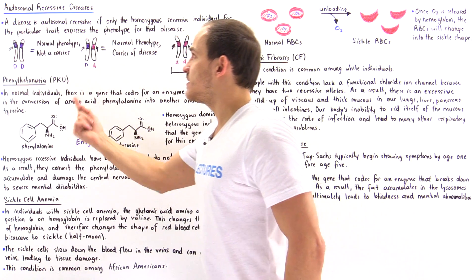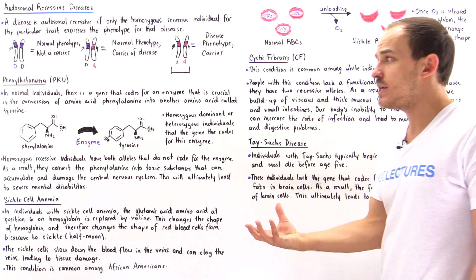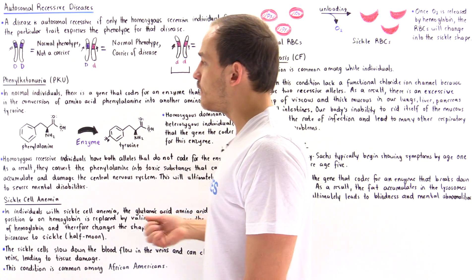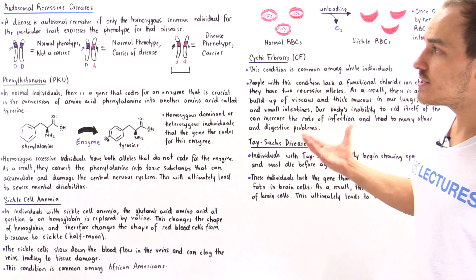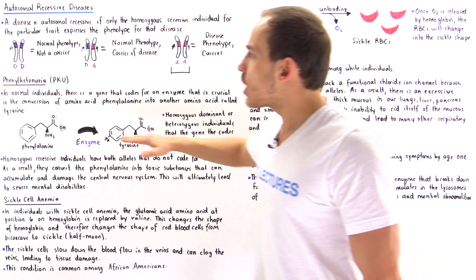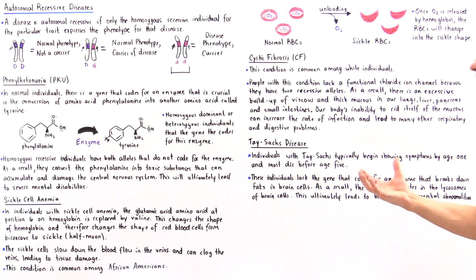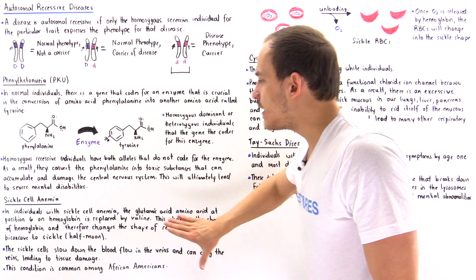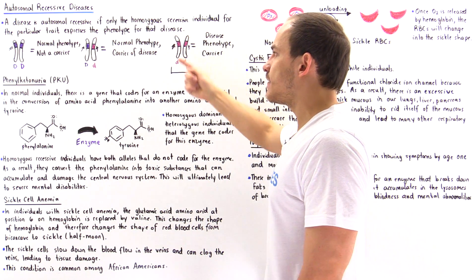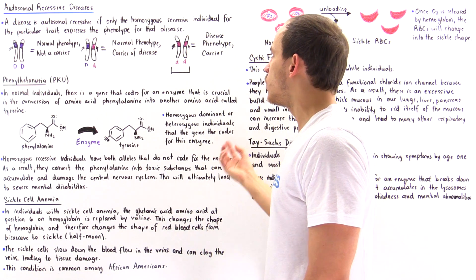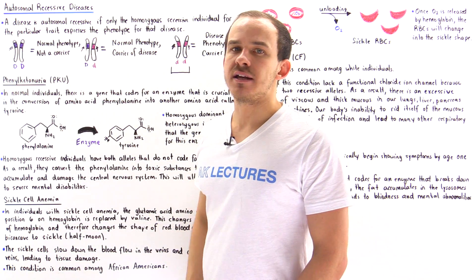Normally, autosomal recessive diseases act very quickly — usually in the first few months or the first few years of that individual's life. So to recap, the four examples of autosomal recessive diseases are phenylketonuria, sickle cell anemia, cystic fibrosis, and Tay-Sachs disease. What each of these diseases have in common is that they only express the phenotype for the disease when the individual has a homozygous recessive genotype for that particular trait.